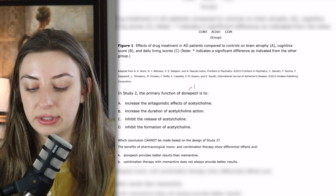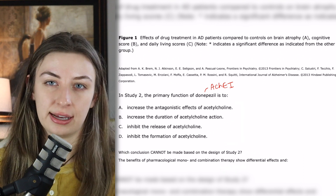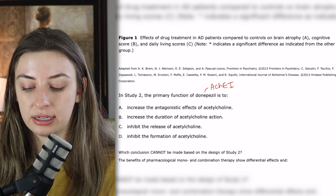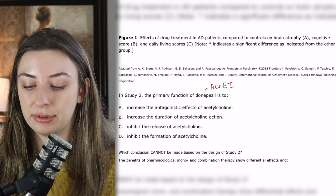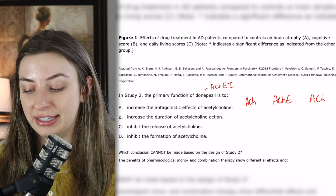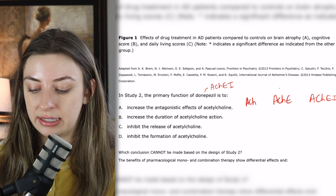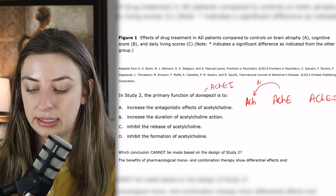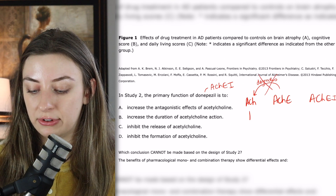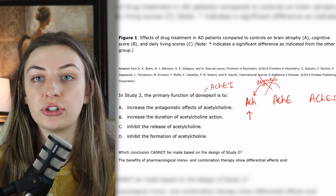Donepezil was that acetylcholine esterase inhibitor. So you have acetylcholine, you have acetylcholine esterase, and then you have acetylcholine esterase inhibitors — this still trips me up sometimes. Acetylcholine esterase is the enzyme that degrades acetylcholine. So if I have an acetylcholine esterase inhibitor, I'm functionally increasing acetylcholine — or really just not getting rid of it as fast, but functionally the same thing.